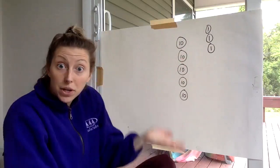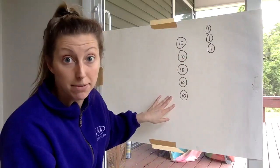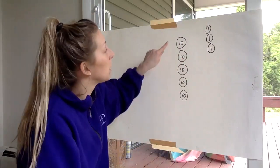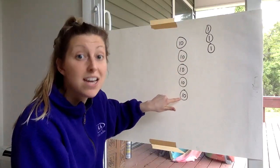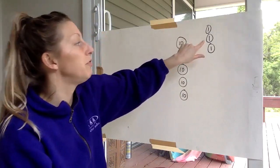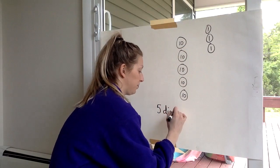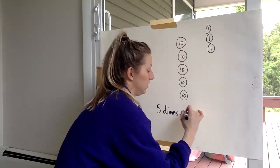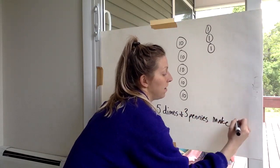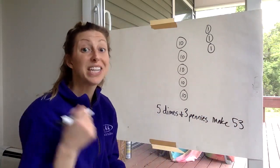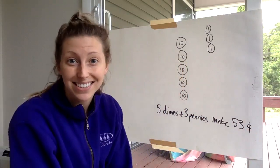So again, what are we going to start with? We're always going to start with the highest coin amount, which is our dimes. And here we go. We're going to go 10, 20, 30, 40, 50, counting on 51, 52, 53. So we have five dimes and three pennies make 53 cents. So I have that C with a line through. 53 cents.